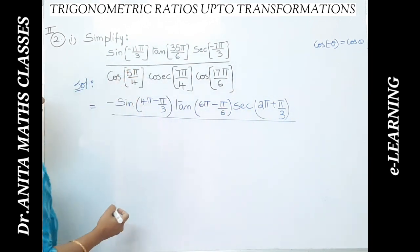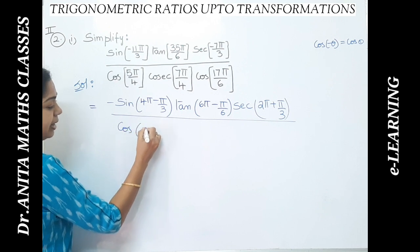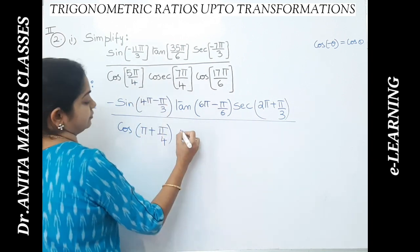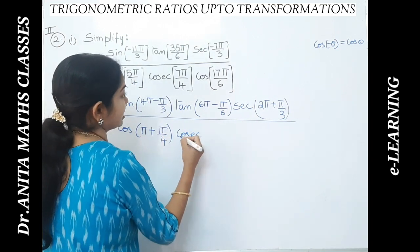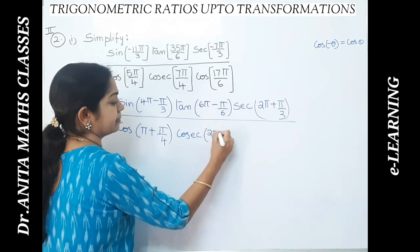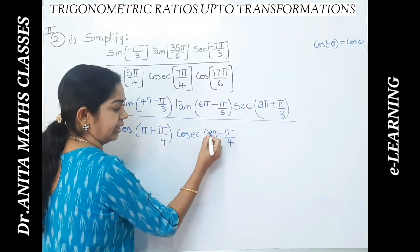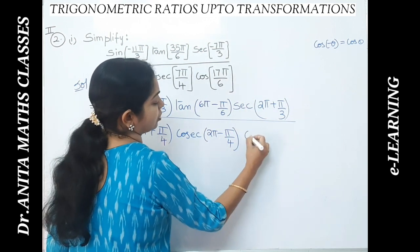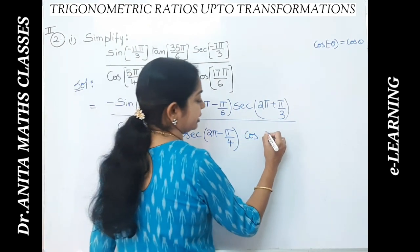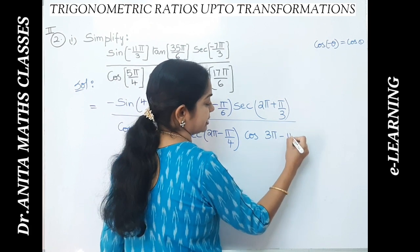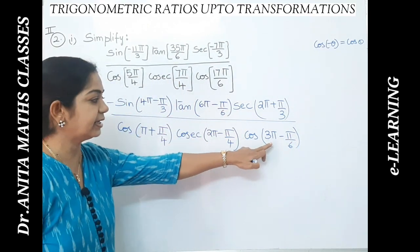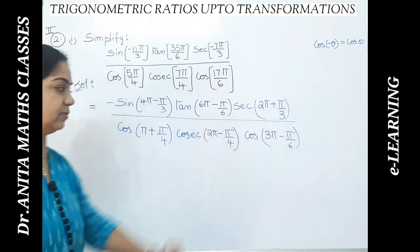For cosine, 5π can be written as π plus π/4 — so 4π plus π gives 5π/4. For cosecant, 7π can be written as 2π minus π/4 — since 8 minus 1 is 7. For cosine of 17, we write 3π minus π/6, because 3×6 is 18, so 18 minus 1 = 17. We can also write this as 2π plus π.